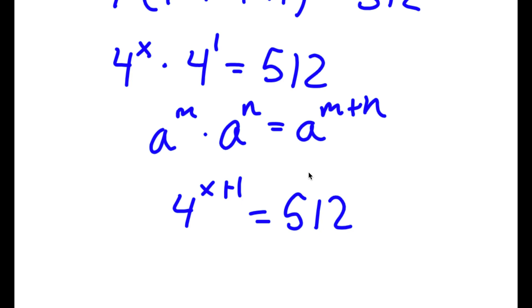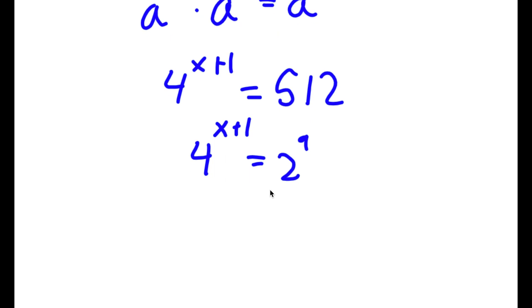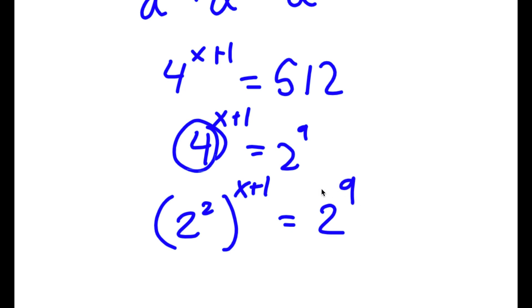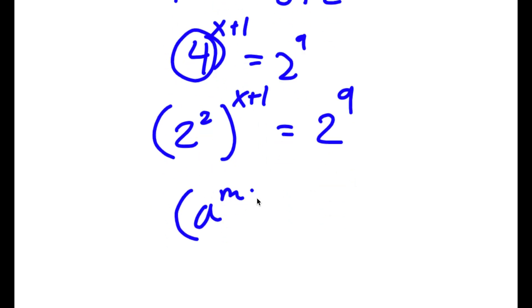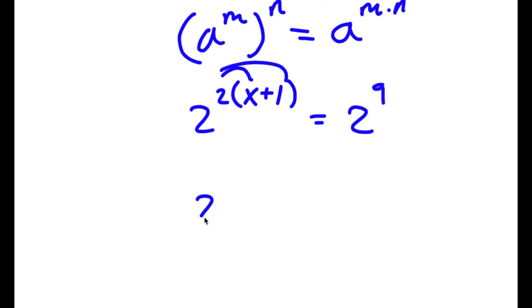Now I'm going to rewrite 512 as 2 to the power of 9. So I have 4 to the power of x plus 1 is equal to 2 to the power of 9. And 4 I can rewrite as 2 squared. So now I have 2 squared to the power of x plus 1 is equal to 2 to the power of 9. If I have a to the power of m to the power of n, this equals a to the power of m times n. So I get 2 to the power of 2 times (x plus 1), which equals 2 to the power of 9. Distributing the 2, I get 2 to the power of 2x plus 2 is equal to 2 to the power of 9.